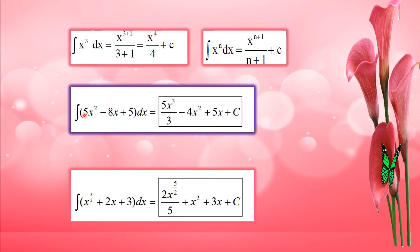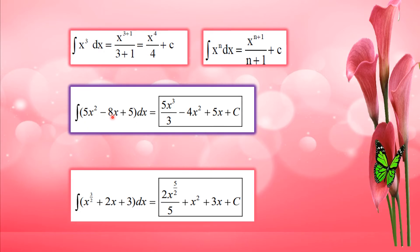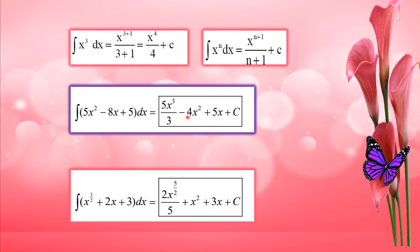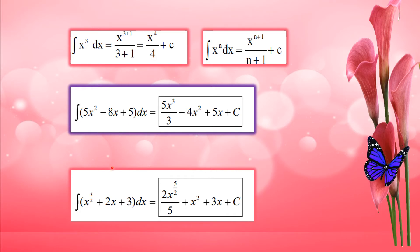For 5 times x squared, we get 5 times x raised to 3 by 3. For minus 8x, we get minus 8 times x squared by 2, which equals minus 4x squared. For the constant 5, the integral is 5x plus c.